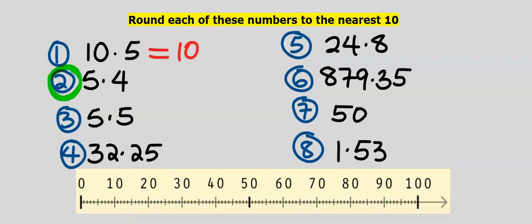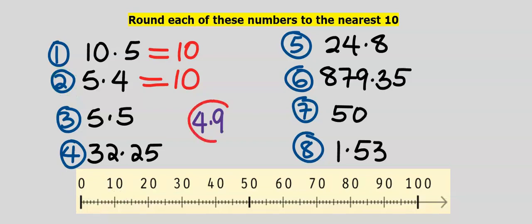5.4 is closer to 10 than to 20. Our answer is 10. For 4.9, our answer is 0.